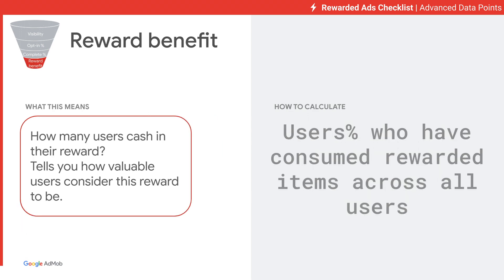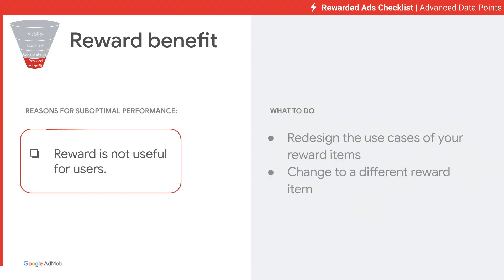The fourth advanced metric is Benefit of Reward, which is calculated as the percentage of users who have consumed the Rewarded items after watching the ad. In other words, it tells you how beneficial your users think the Rewarded items are. If this metric is not performing well, it could be that users don't think the Rewarded item is valuable enough. In this case, you should consider redesigning the use cases of the Rewarded items or changing to a different Rewarded item.